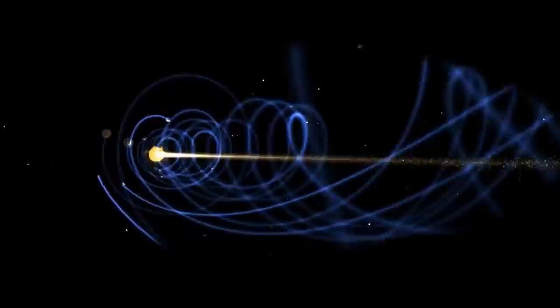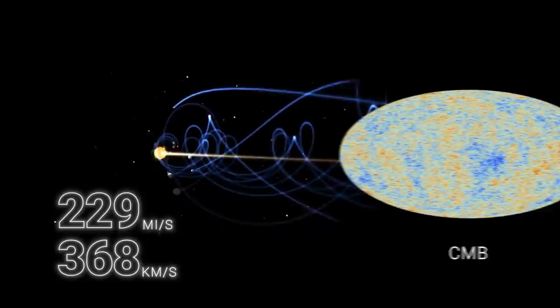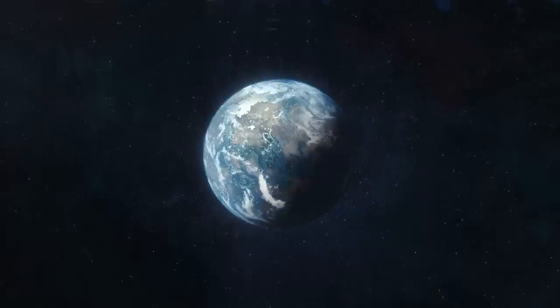By measuring tiny variations in this radiation, scientists have determined that Earth, and our entire solar system, are moving through the universe at about 229 miles per second relative to the cosmic microwave background radiation.